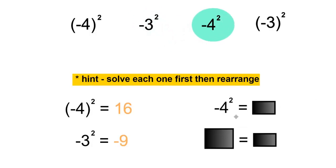Then we have negative 4 to the power of 2, 4 times 4 is 16, times negative 1 is negative 16.